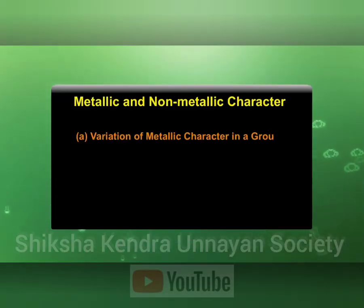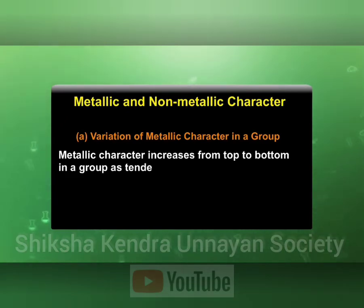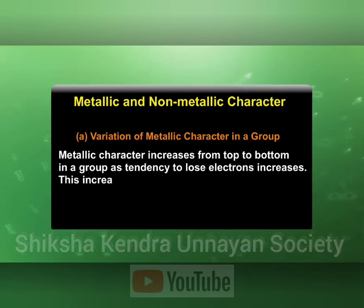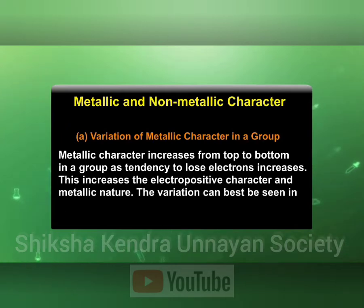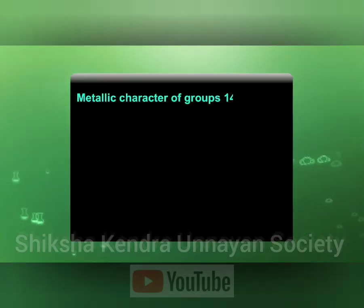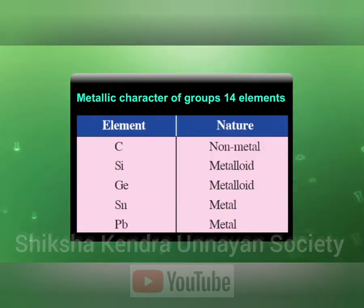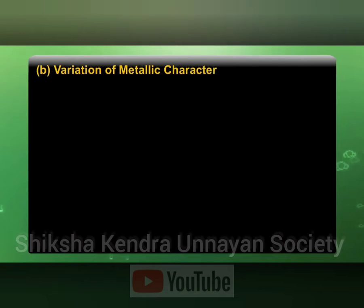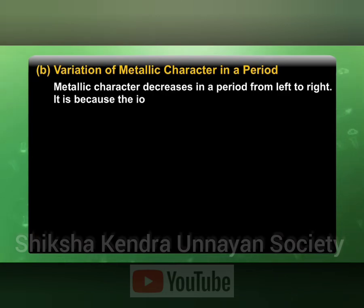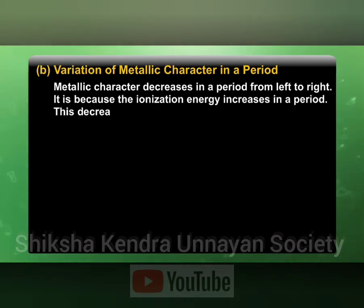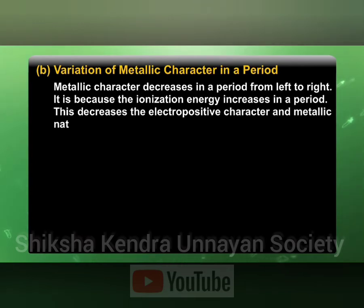Variation of metallic character in a group: metallic character increases from top to bottom in a group as the tendency to lose electrons increases. This increases the electropositive character and metallic nature. Variation of metallic character in a period: metallic character decreases in a period from left to right, because ionization energy increases in a period, which decreases the electropositive character and metallic nature.